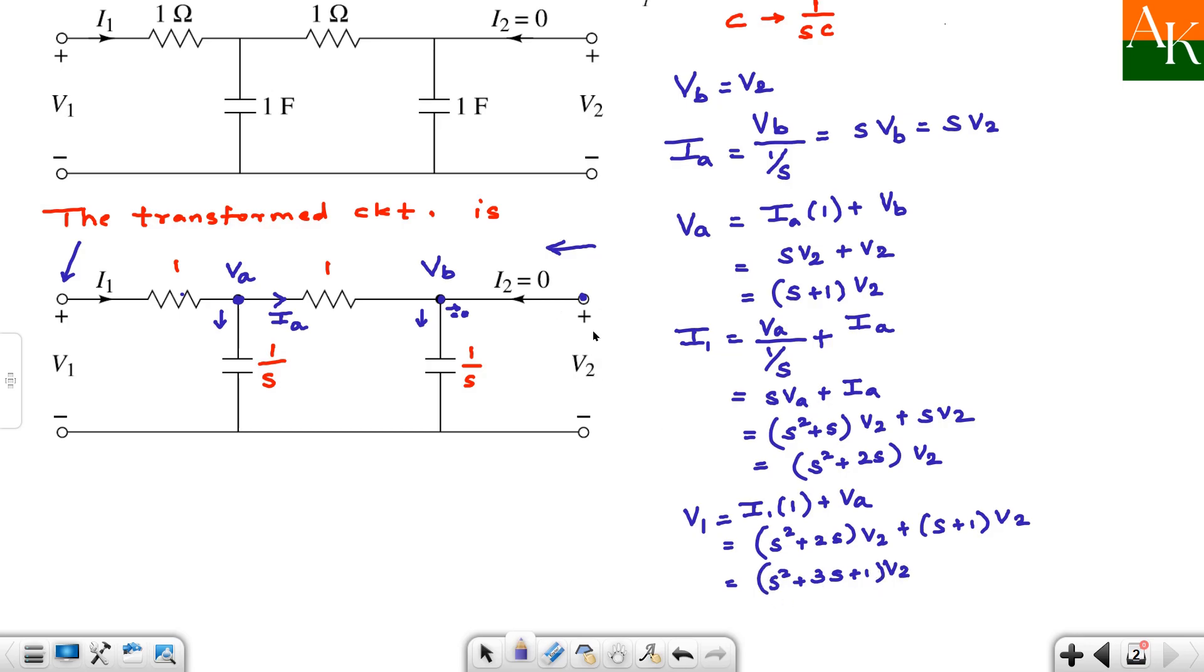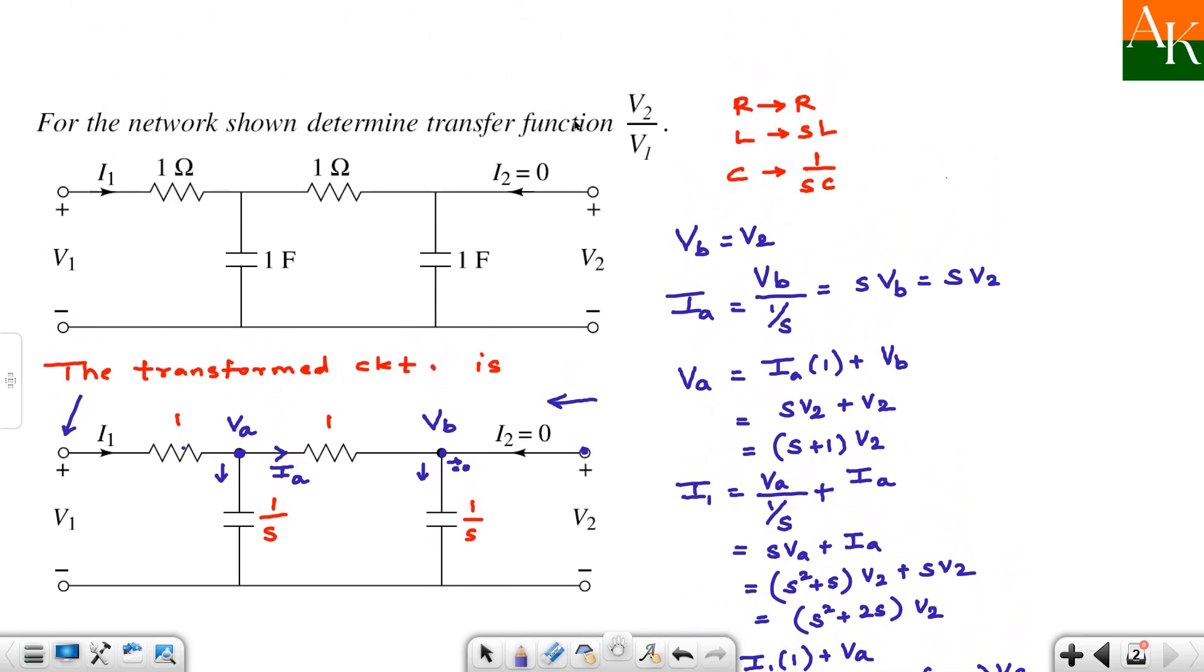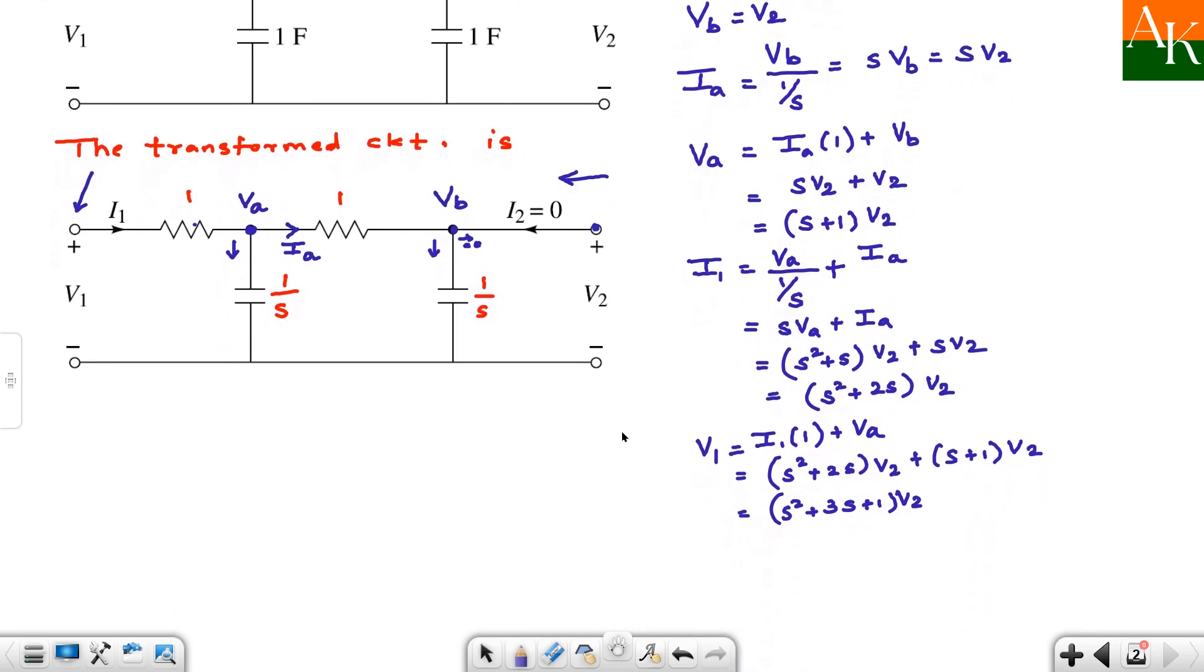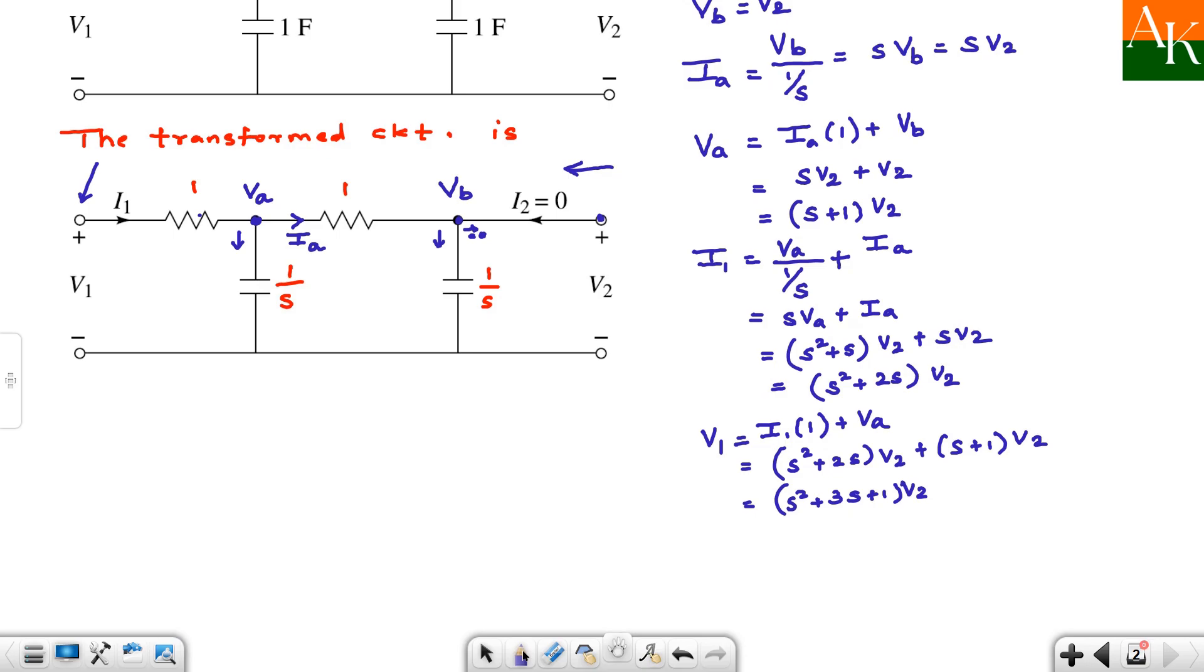So, you have transferred V2 over here and you have obtained V1 in terms of V2. So, now see what the problem is asking. They are asking you to calculate V2 by V1. So, that we can easily find out. How to find out? From this equation. So, V2 by V1 is asked. So, this will become 1 by S square plus 3S plus 1. So, we have calculated V2 by V1. So, the problem is finished.